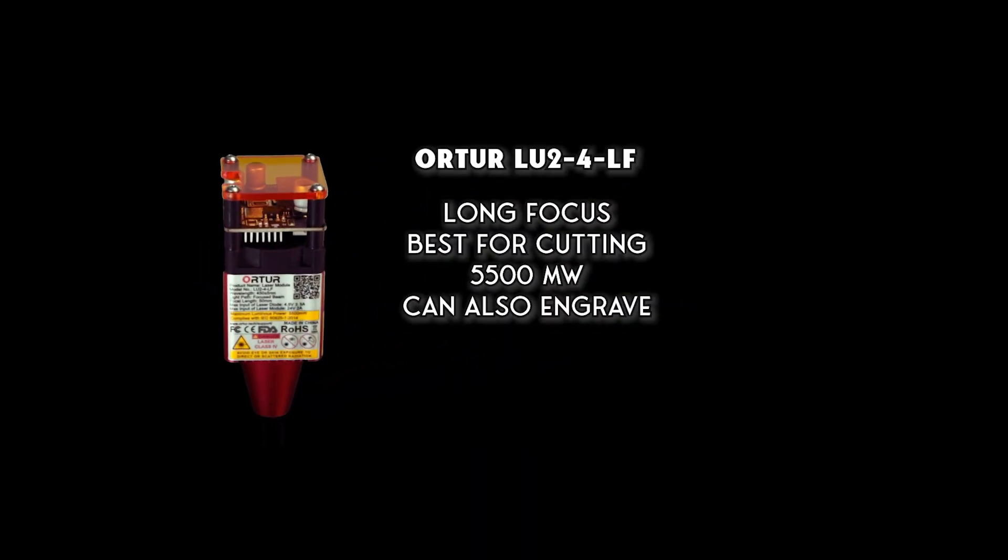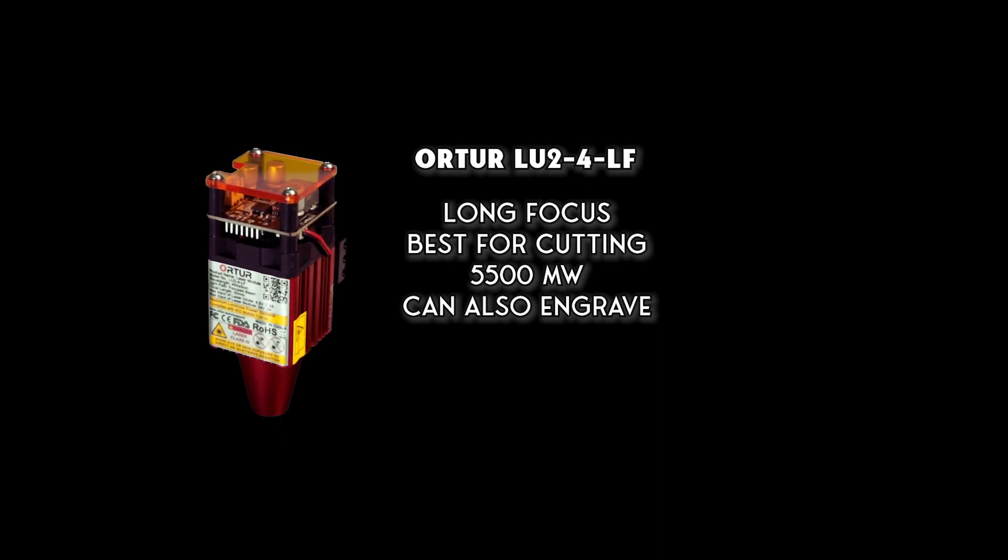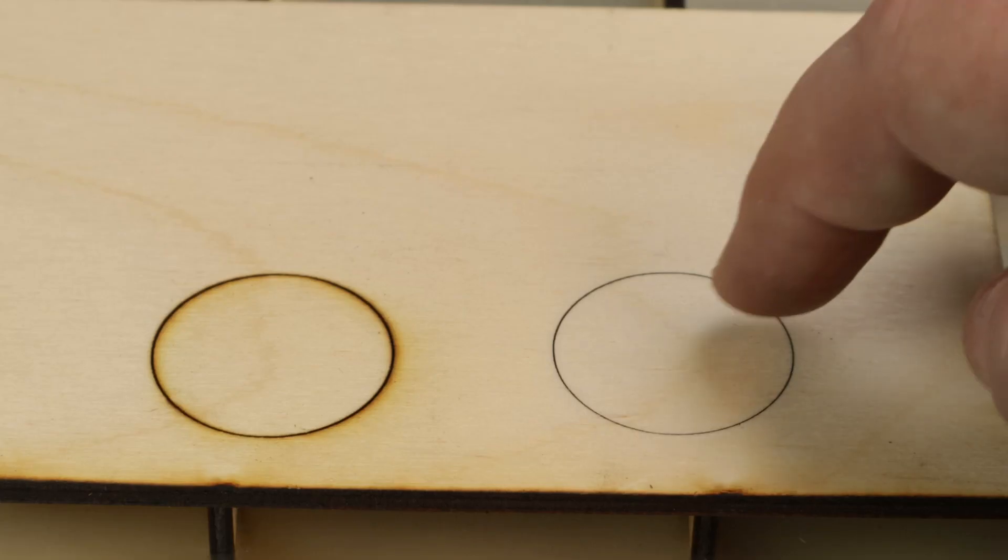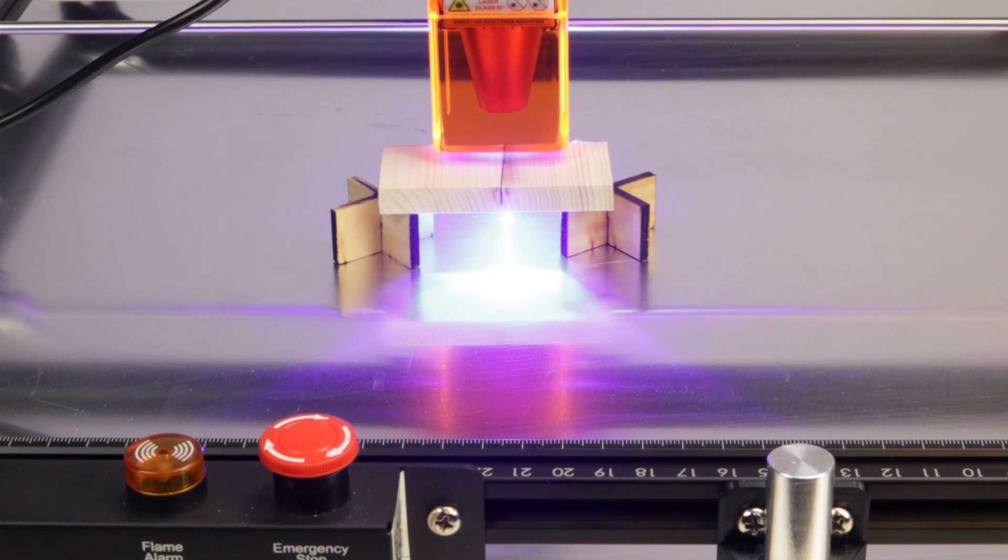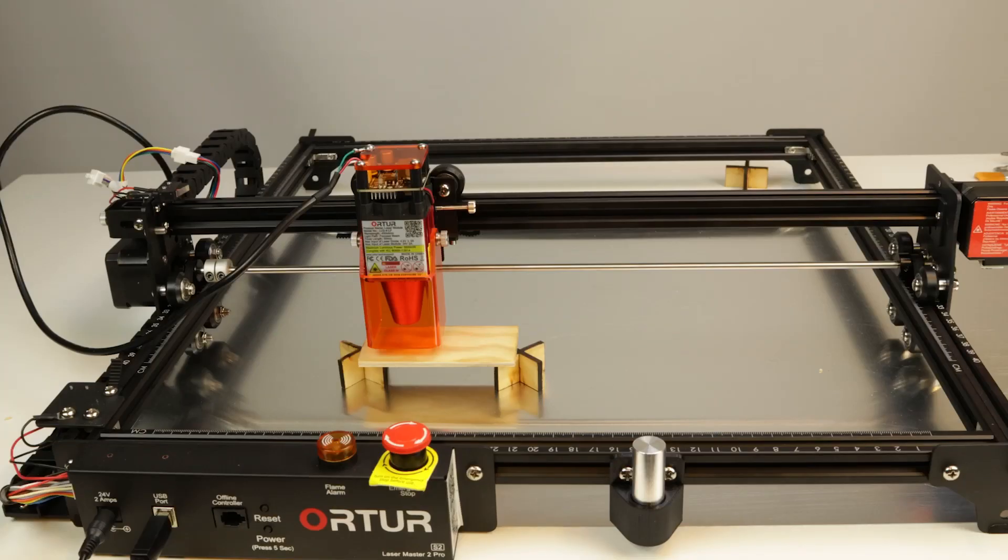We're using the Ortur LU2-4-LF laser. LF means long focus. This is a 5500 milliwatt laser designed for cutting, but it's also good for engraving. We're gonna do more cutting tests both with and without the air assist, but first, a little bit of engraving.